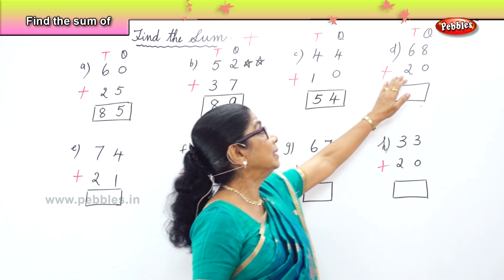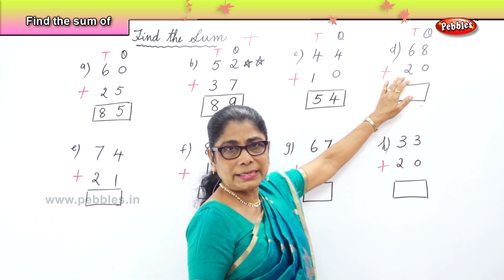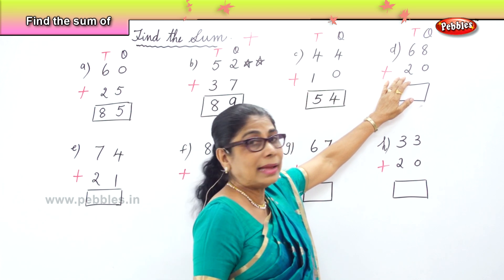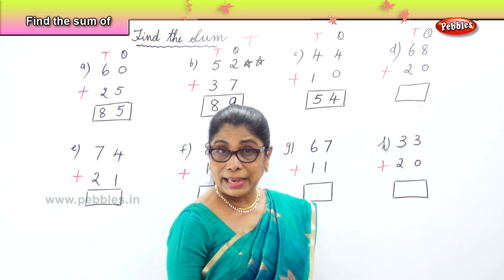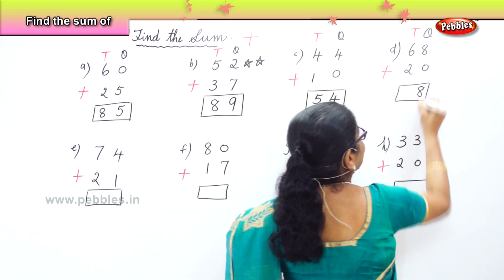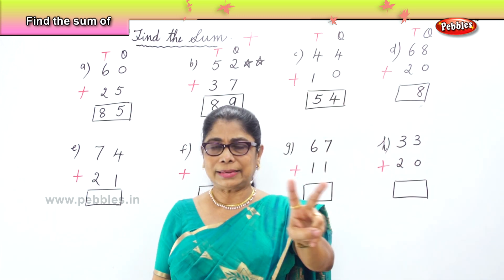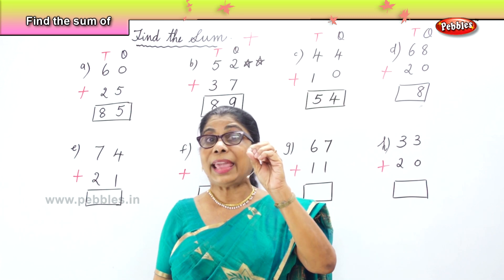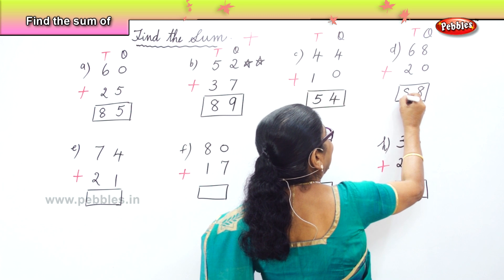Find the sum of 68 and 20. Let's look at the ones place. In the ones place you have 8 and 0. 8 plus 0 is 8 — any number plus 0 is the number itself. Then you have 6 tens and 2 tens. 6 plus 2 is 8, so you have 8 tens. 6 tens plus 2 tens make 8 tens. Very good.